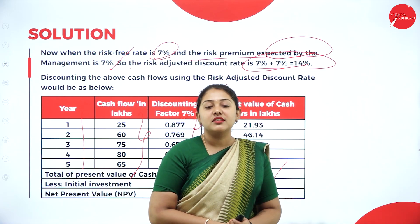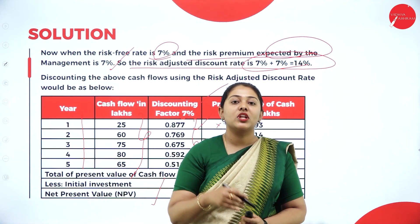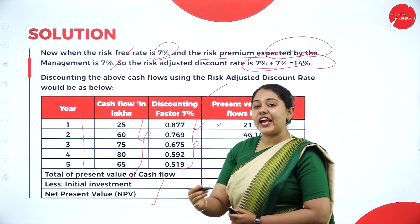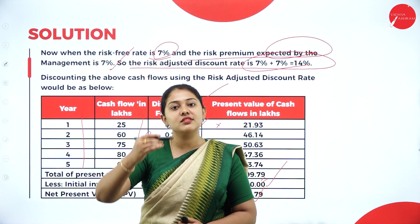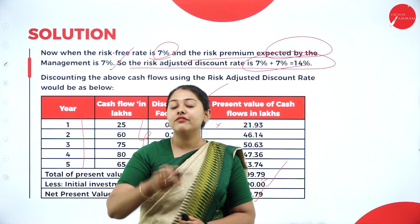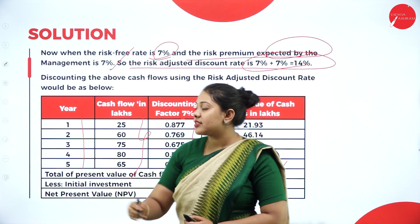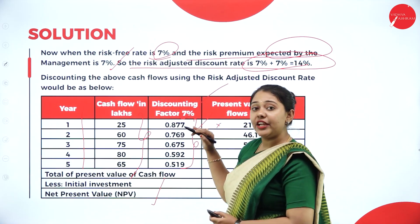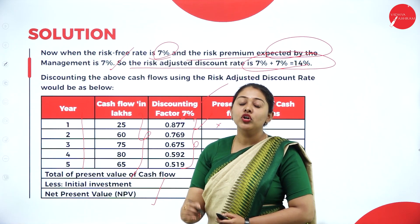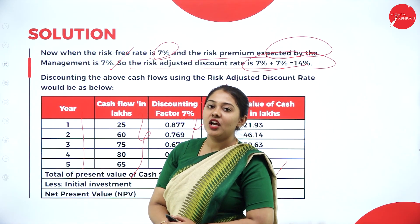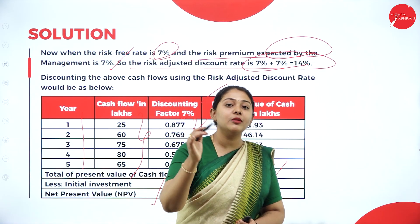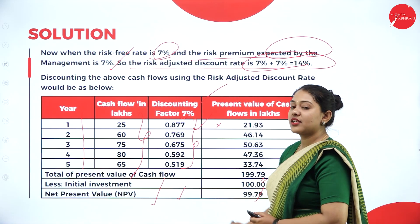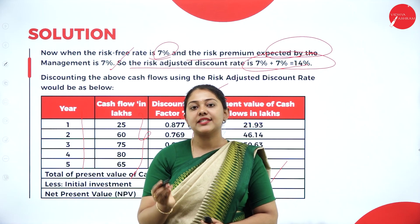This is how you calculate risk adjusted discount rate when combining risk premium and risk free rate to get 14%. The process is straightforward: set up a table with years, given cash flows, and the discounting factor from the PV table at rupee 1 at 14%. Multiply the discounting factor by the cash flow to get the present value of cash flows. Sum those present values to get total present value, then deduct the initial investment to get the net present value under risk adjusted discount rate technique.